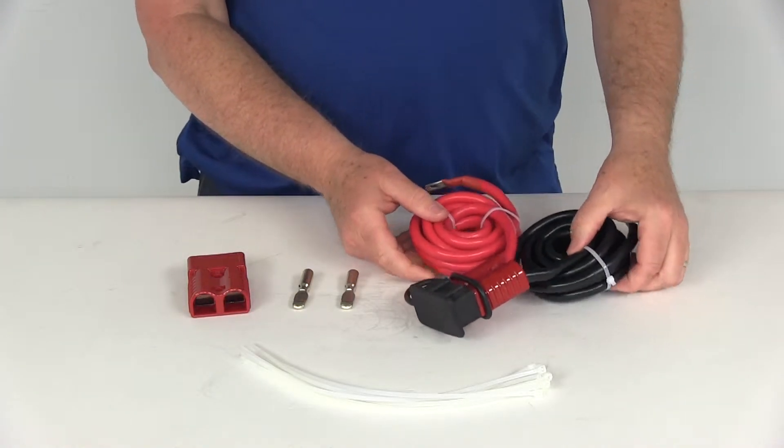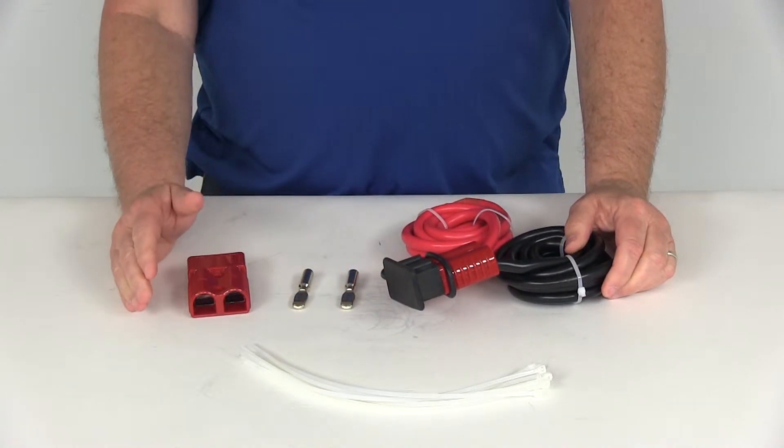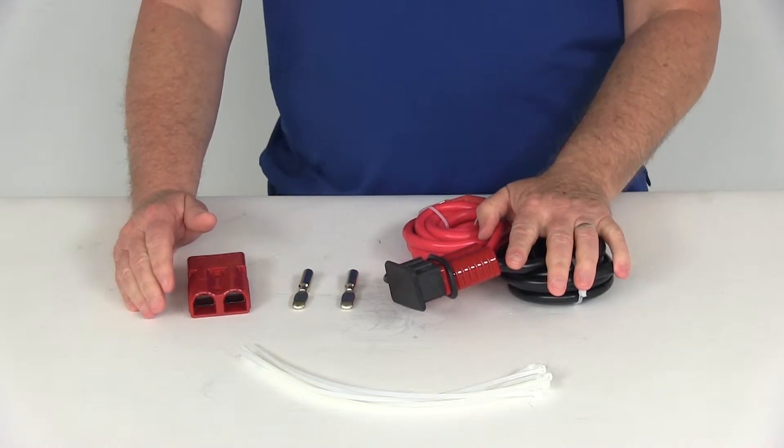Today we're going to review part number BDW20025. This is the Bulldog Fully Assembled Front Wiring Kit.